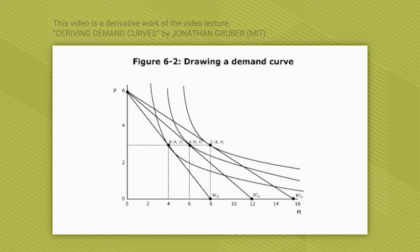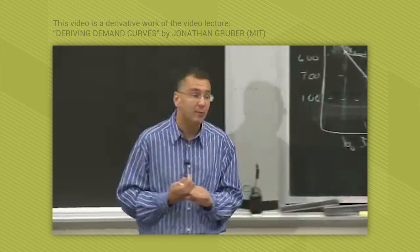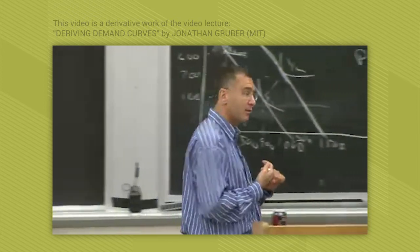And given those preferences I wrote down, u equals square root of p times m, you end up choosing point C with the same three pizzas but now eight movies. How do we know that's right? First of all, the marginal rate of substitution you can compute will equal the new marginal rate of transformation. And also you can see that you spend your entire $96 income, exactly splitting it with $48 on movies and $48 on pizza.